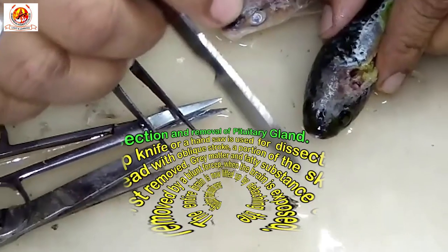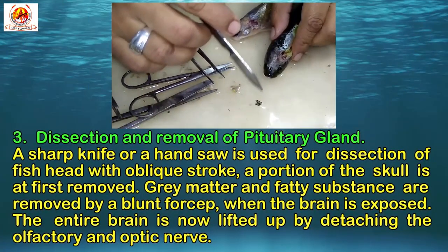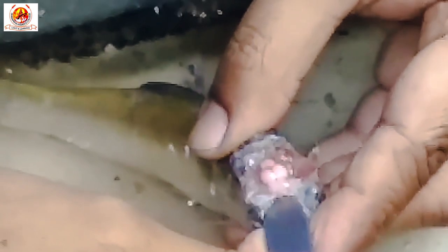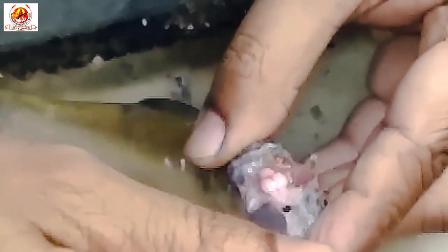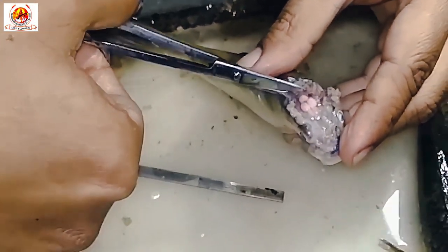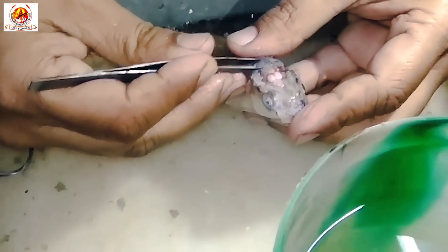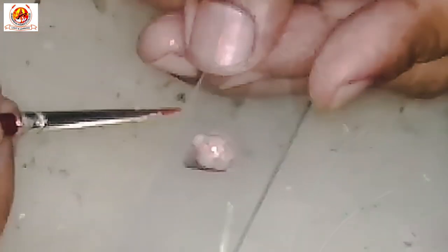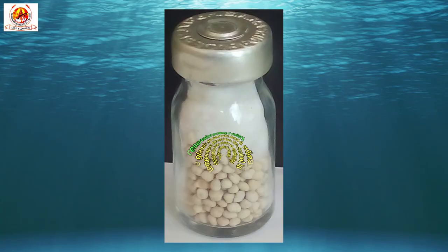Now let us come to the dissection and removal of the pituitary gland. A sharp knife or hand saw is used for dissection of the head with an oblique stroke. A portion of the skull is first removed. Grey matter and fatty substances are removed by a blunt forcep when the brain is exposed. Then the entire brain is lifted up by detaching the olfactory and optic nerves. The pituitary gland is located just posterior to the optic chiasma, covered by a thin membrane. When the gland is exposed, it is carefully picked up with tweezers or forcep. Care should be taken so that the pituitary gland is not damaged.